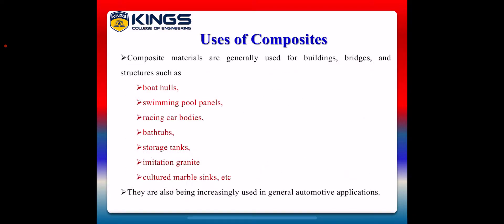Next, we are going to see about uses of composites. Composite materials are generally used for buildings, bridges, and structures such as boat hulls, swimming pool panels, racing car bodies, bath tubs, storage tanks, imitation granite, cultured marble sinks, etc. They are also being increasingly used in general automotive applications.